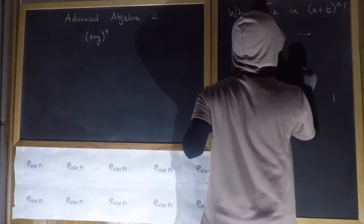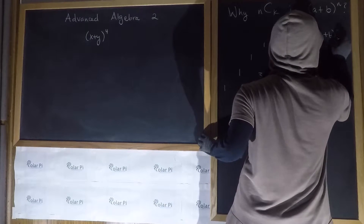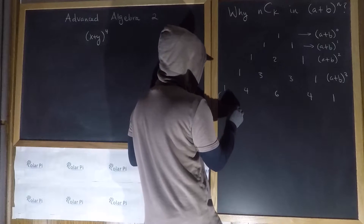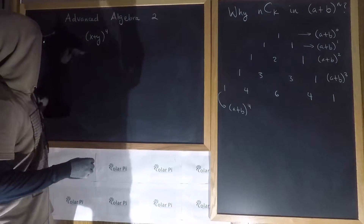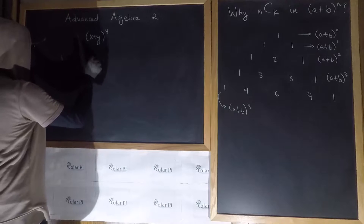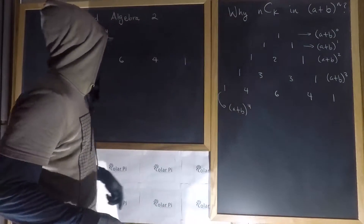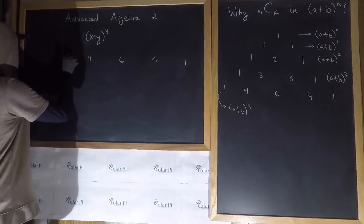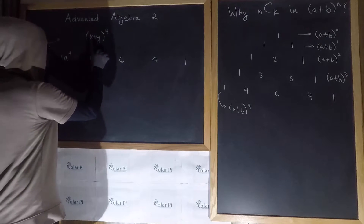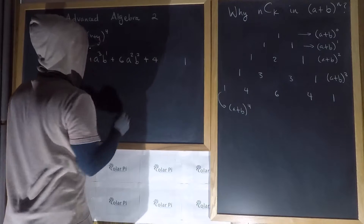This first row — rows are horizontal, remember — is for a plus b to the power of 0. The next row is for a plus b to the power of 1, then a plus b to the power of 2, a plus b to the power of 3, and clearly this last one is for a plus b to the power of 4. So if you're doing x plus y to the power of 4, as soon as you've laid down this row you're good. You'd write 1, 4, 6, 4, 1. A starts with all the power, so 1 times a to the power of 4 and b to the power of 0. Then a loses 1 power and b gains that lost power, and so on.